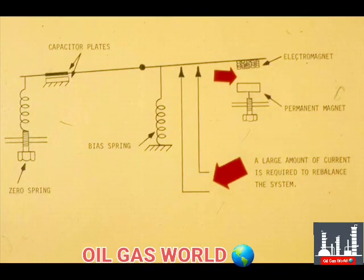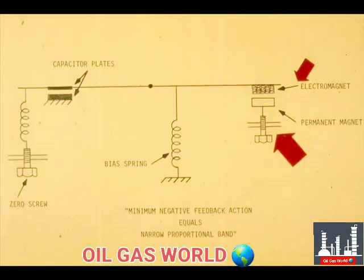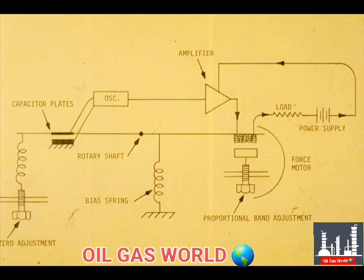When the permanent magnet is farther away from the electromagnet, the force motor is weaker, so it takes more current to produce the necessary rebalancing force. When the permanent magnet is farther away, the proportional band is narrow because negative feedback action is minimum. For a given movement of the capacitor plates, it would take a great amount of current to produce the necessary negative feedback. Here is our completed schematic. Study the components and adjustments for a moment.